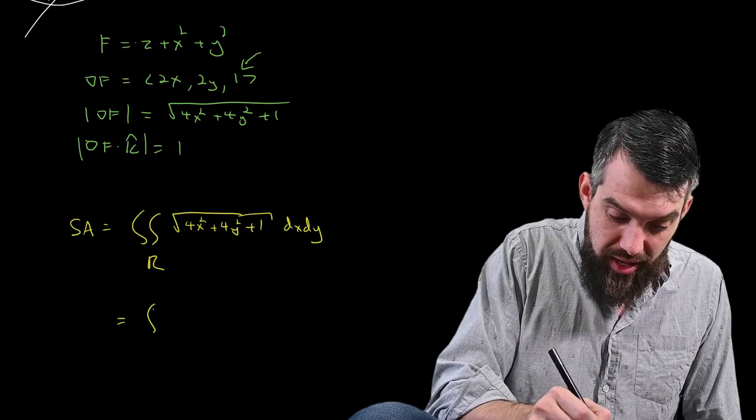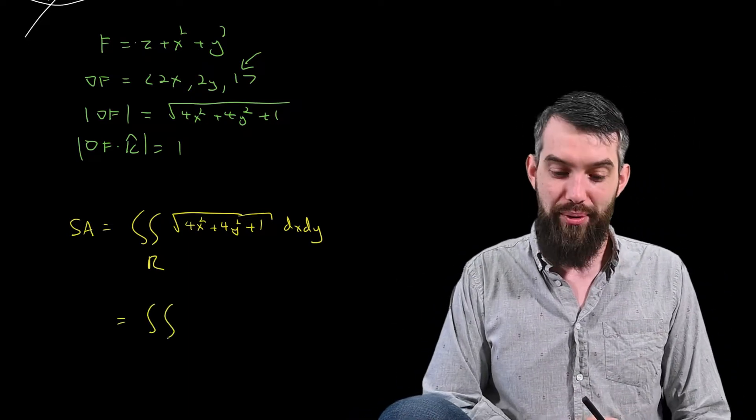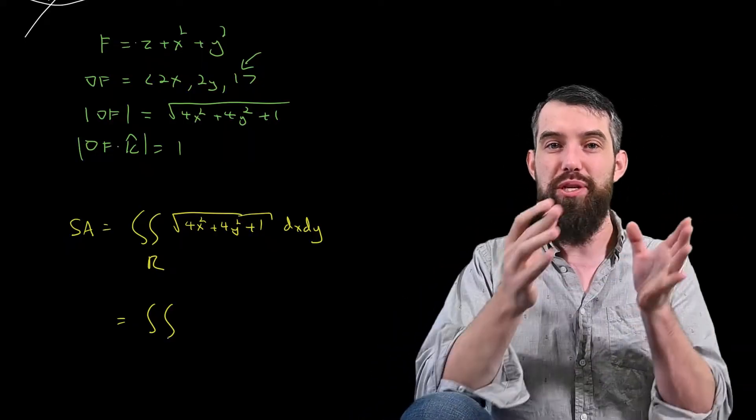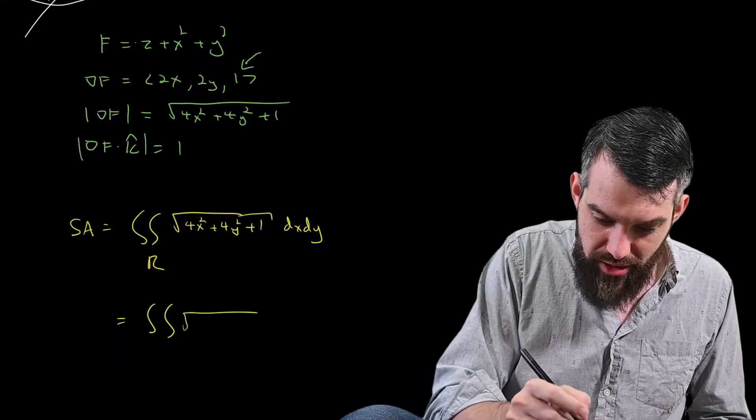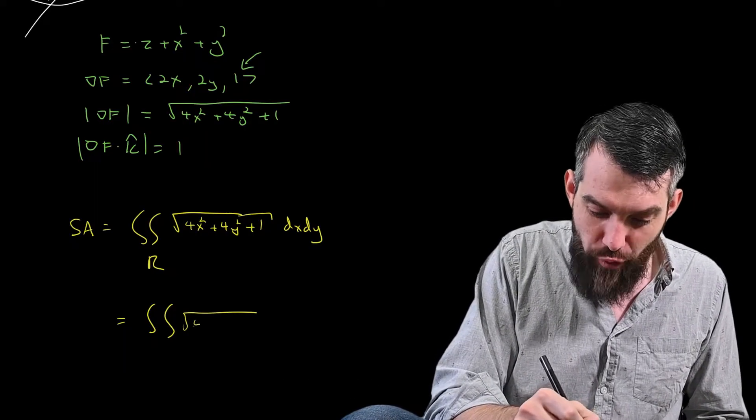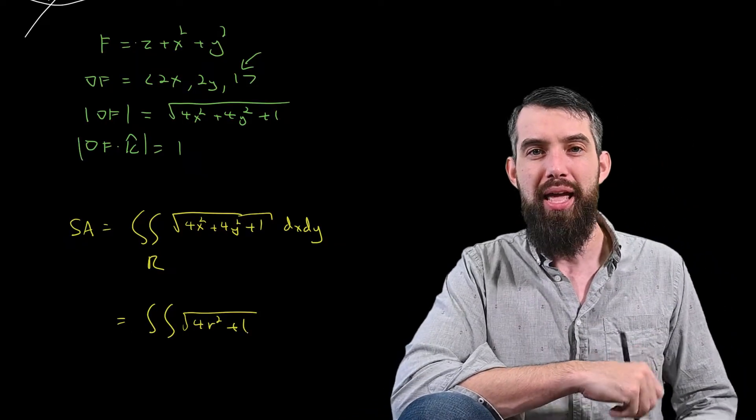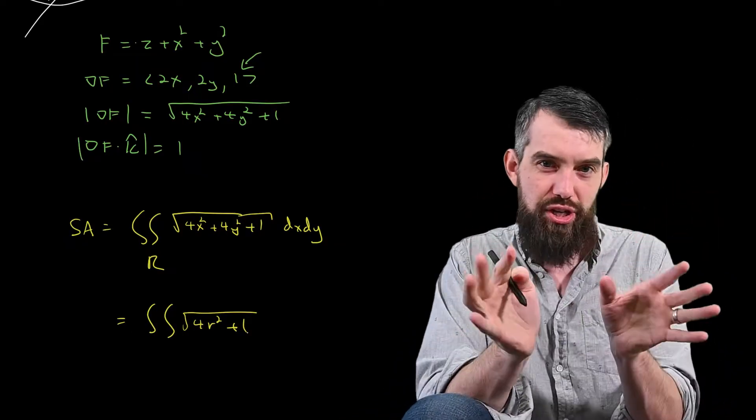So this is going to be the double integral, and I will now know what it's the double integral of. x squared plus y squared is r squared. So this becomes, in the integrand, the integral of square root of 4r squared plus 1.